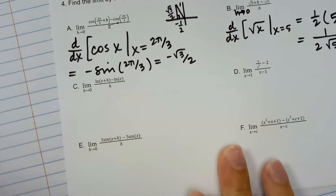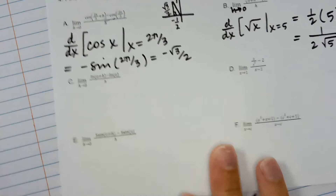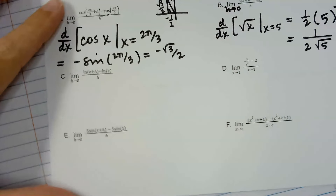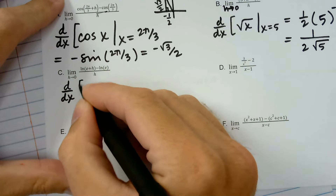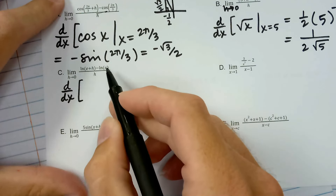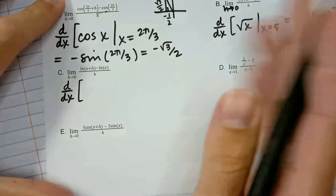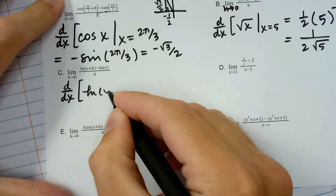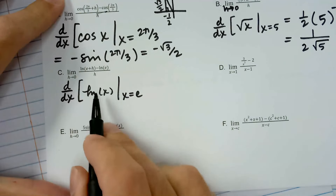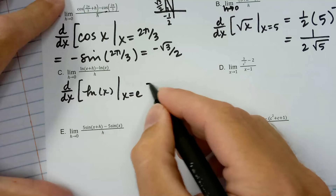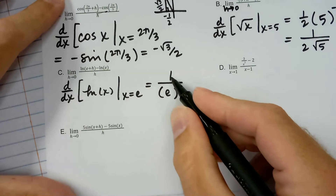Here we've got the limit as h approaches 0 of natural log of e plus h minus natural log of e, divided by h. We do know that natural log of e is 1, but that's not really what you're getting asked. This is a derivative — we see h approaching 0, rise over run. The function appears to be natural log, and the value we're plugging in — we see e and e plus h — so this is the derivative of natural log x at x equals e. Derivative of natural log x is 1 over x, plugging in x equals e gives 1 over e.